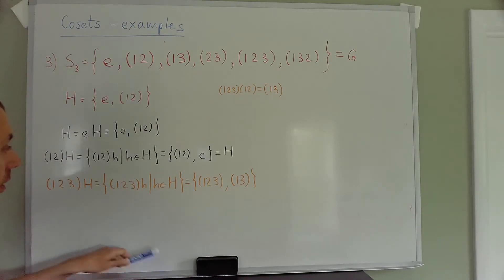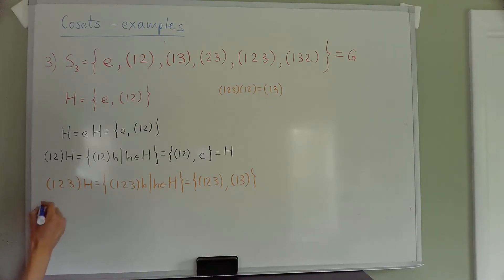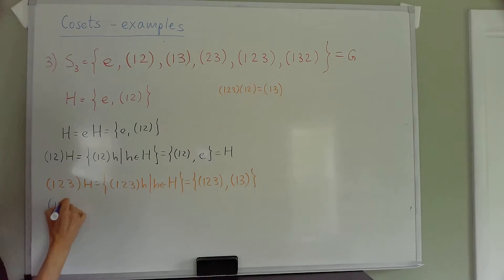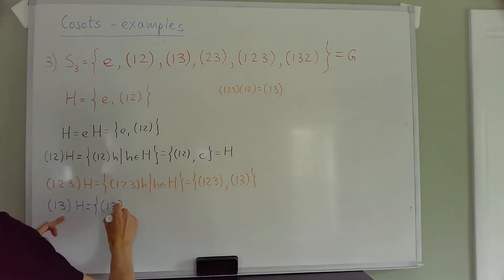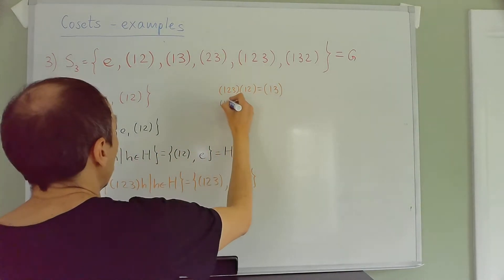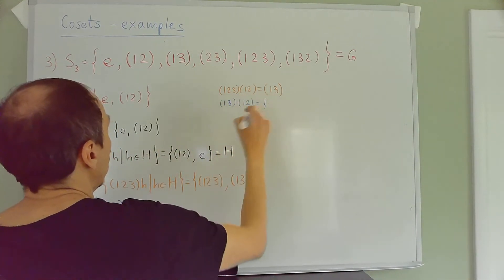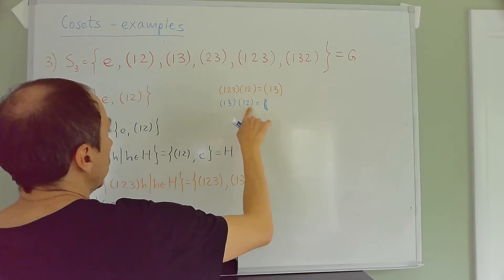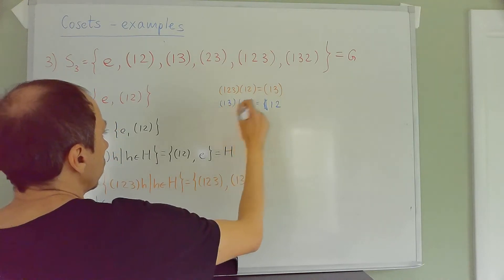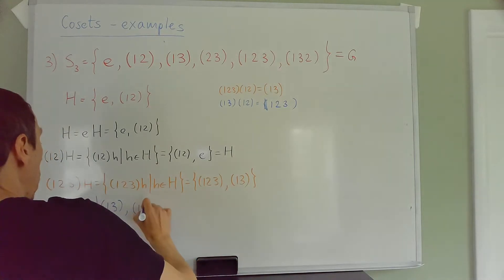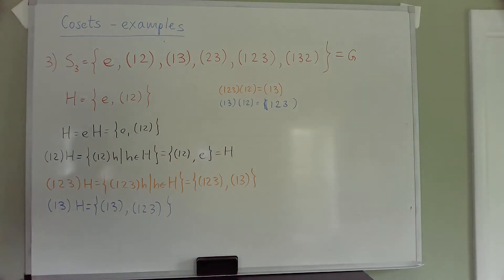So the coset (1 2 3)H = {(1 2 3), (1 3)}, which is different from H. Let's now try g = (1 3). Then (1 3)H: (1 3)·e = (1 3), and (1 3)·(1 2): 1 goes to 2 and that's the end; 2 goes to 1, 1 goes to 3, so it gives (1 2 3). We get {(1 3), (1 2 3)} — the same coset as before.